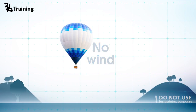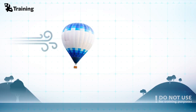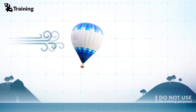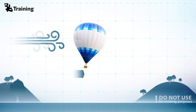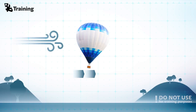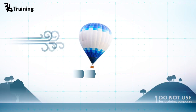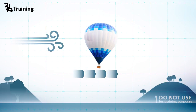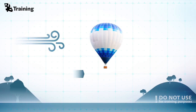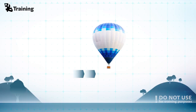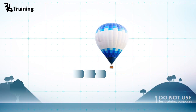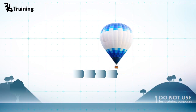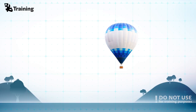But as soon as the wind appears, you will start to move relatively to the ground — or the same tree we mentioned as an example. This way, your travel distance will correspond to the wind. Makes sense, right?